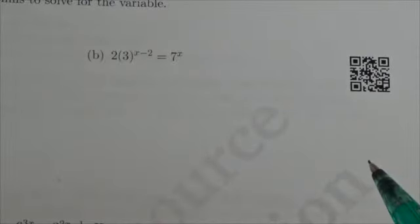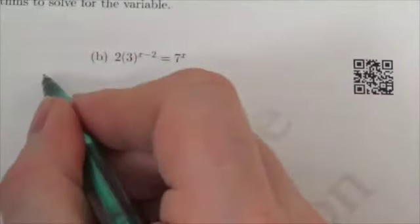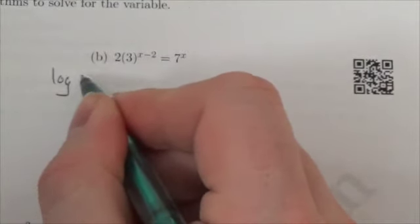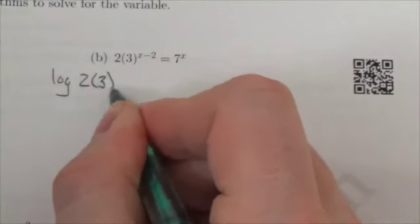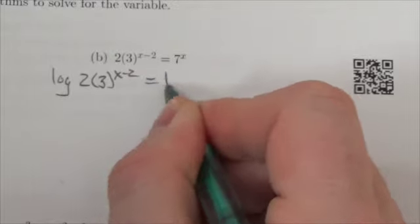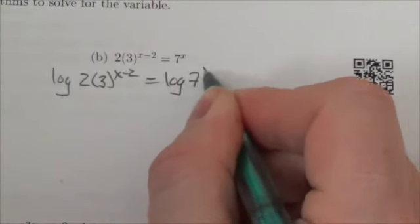Now what I'm going to do here is take the log of both sides of this equation. So the log of 2 times 3 to the x minus 2 is equal to the log of 7 to the x.